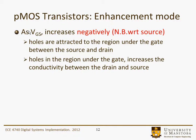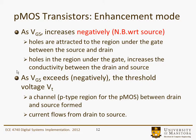As VGS increases — meaning negatively, so the magnitude is increasing with respect to the source — holes are attracted to the region of the gate between the source and drain. Holes in the region under the gate increase the conductivity between the drain and source. As VGS exceeds, again negatively, a threshold voltage VT, a channel — basically a P-type region — is formed in the N-type substrate between the drain and source, and current flows from the drain to the source.